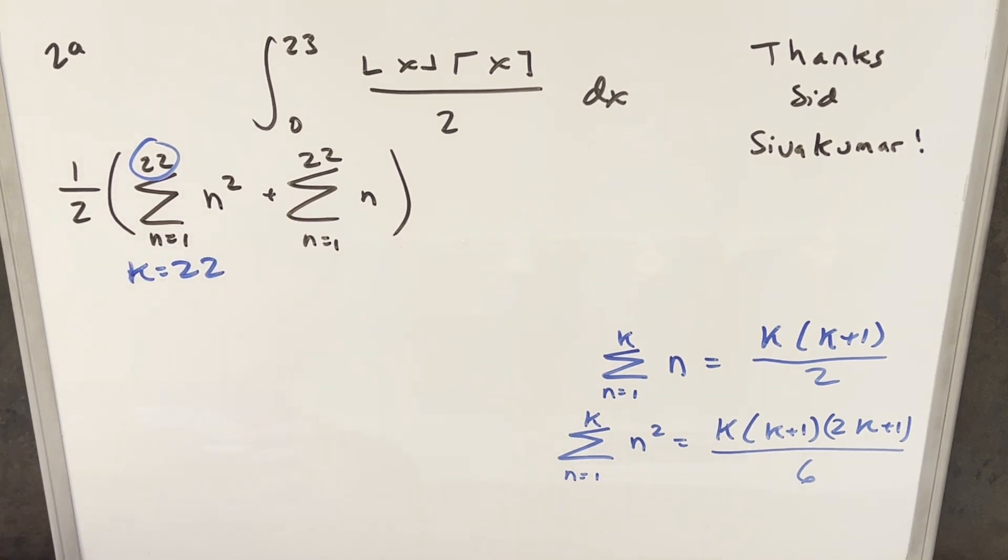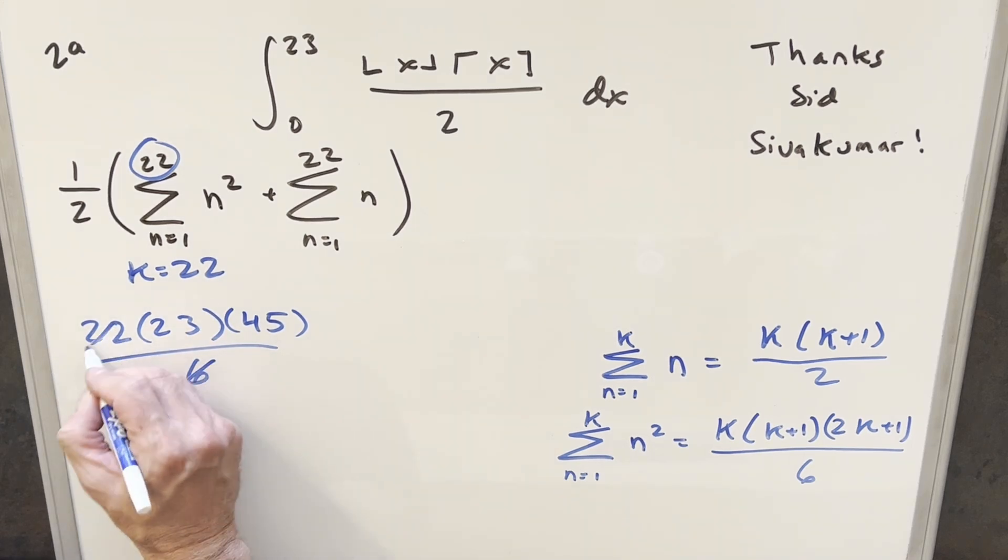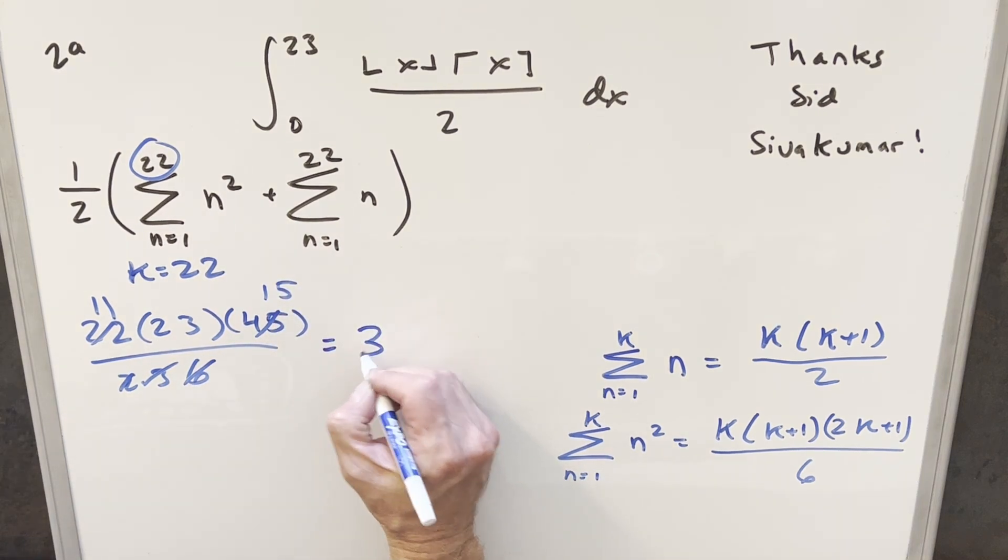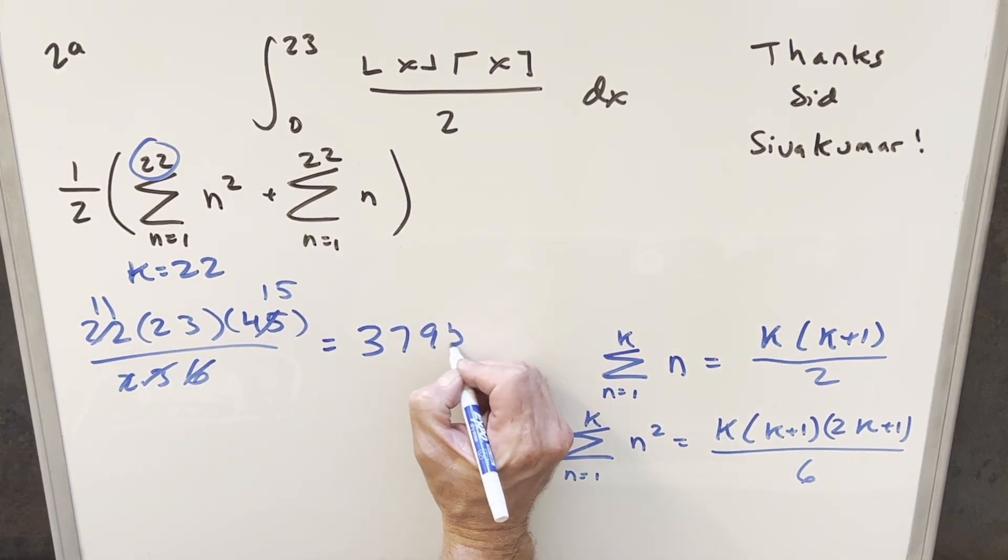We want to use this formula here. So using this, we're going to have 22 times k plus 1 is going to be 23. Then 2k plus 1 is going to be 45, and this is going to all be over 6. For 6, I can write it as 2 times 3. Cancel here and we get 11. Cancel here and we get 15. Multiply this out and what you get is 3795.